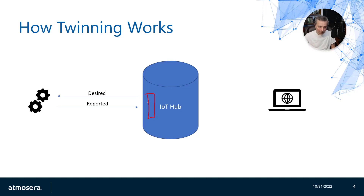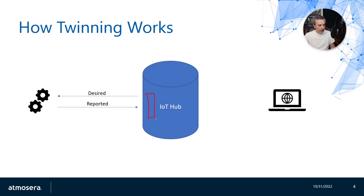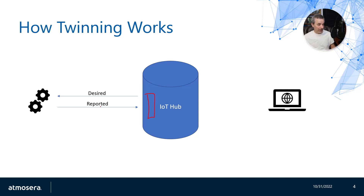The device twin on IoT Hub stores both desired and reported data. It timestamps that data and adds a version number that increments with each update, so you know when the desired data was sent and when the device's reported data was sent. This allows you to compare what was sent from IoT Hub as desired versus what was reported back from the device.